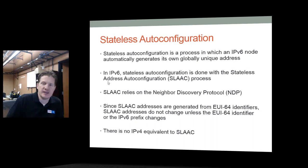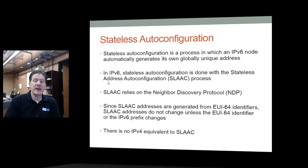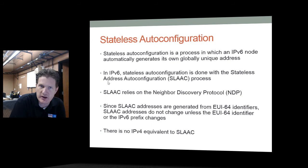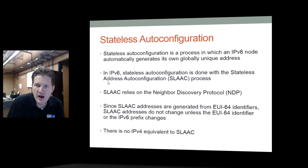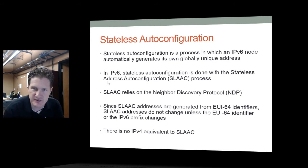Stateless address auto-configuration (SLAAC) is a unique process in IPv6 that allows nodes to generate their own globally unique address. SLAAC relies entirely upon the neighbor discovery protocol to function. Addresses are generated from EUI-64, an industry standard. Basically, the machine creates its EUI-64 number and then uses that identifier, combined with a prefix heard from a router, to assign itself a globally unique address.